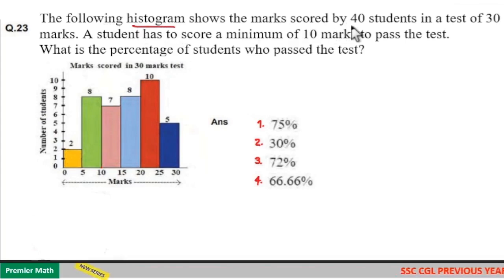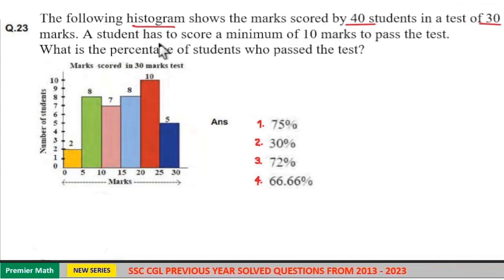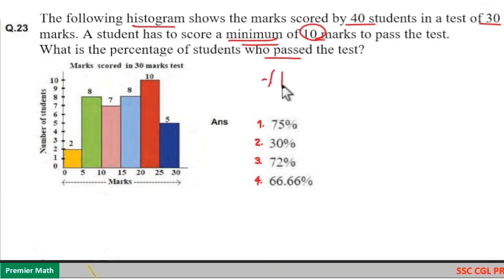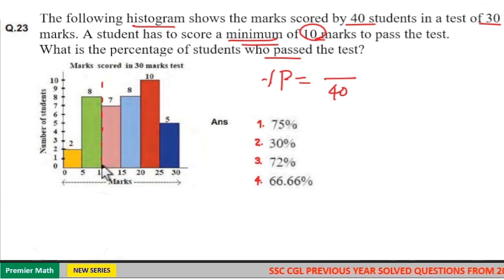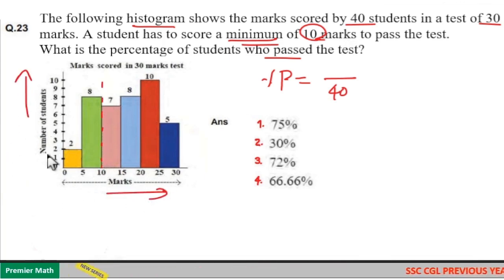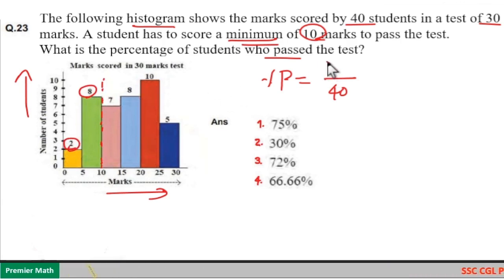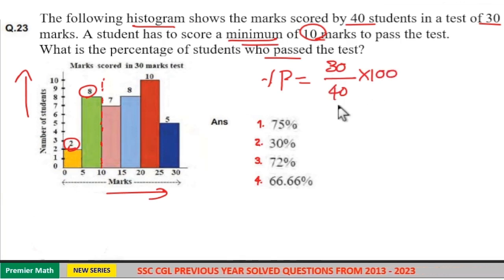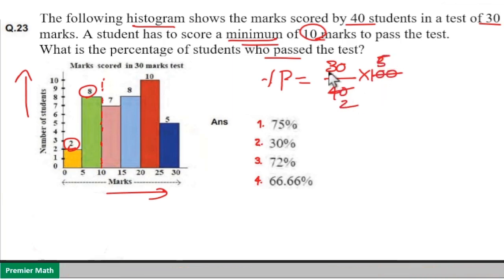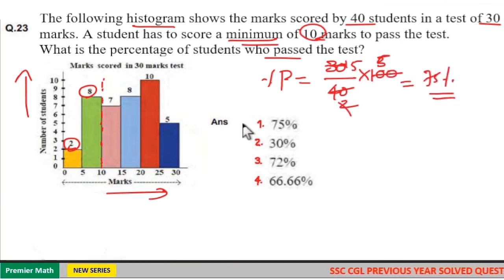A histogram shows marks scored by 40 students in a test of 30 marks. A student needs minimum 10 marks to pass. Students scoring less than 10 marks: 2 plus 8 equals 10 students failed. Remaining 30 students passed. Required percentage equals 30 by 40 into 100 equals 75%. Option 1 is your answer.